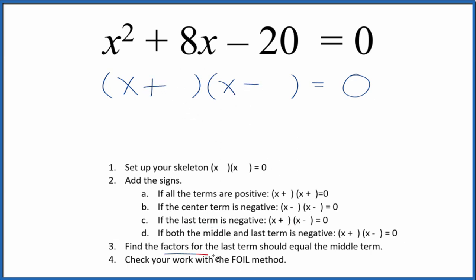Next, we want to look at the factors for the last term. That's the negative 20. And they should add up to the middle term, the 8. So let's write the factors for 20.